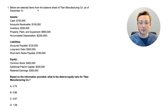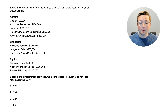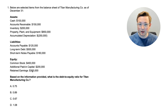Below are the selected items for the balance sheet of Titan Manufacturing Co. as of December 31st. For assets: cash $100K, accounts receivable $150K, inventory $200K, property, plant, and equipment $850K, and accumulated depreciation of $250,000. Liabilities: accounts payable $120K, long-term debt $500K, short-term notes payable $180K. Equity: common stock $400K, additional paid-in capital $200K, and retained earnings $300K.